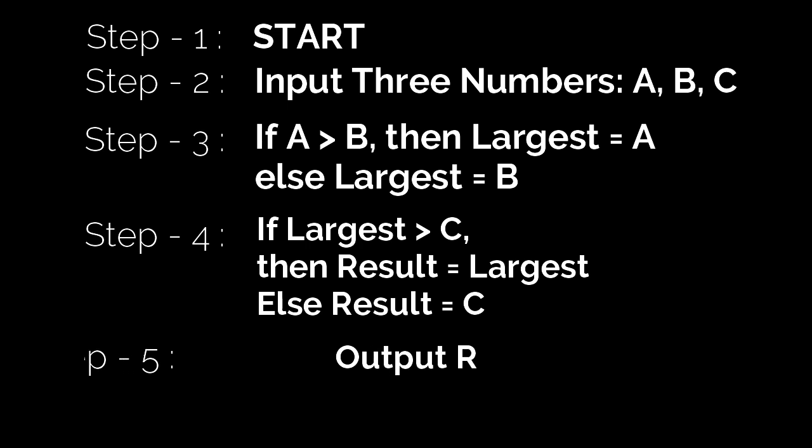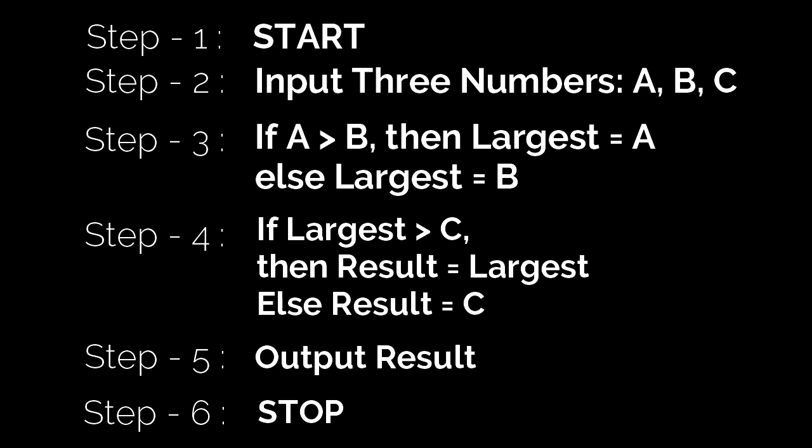Now, it's time to display the final value. For us it is result. So, this step will display the final value, that is the largest value among the three numbers, and then you can go for the final step of algorithm that is stop.